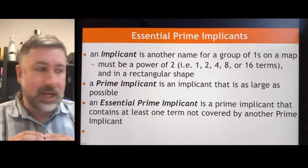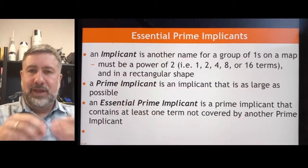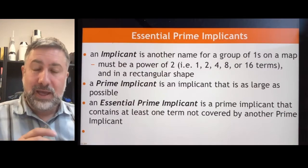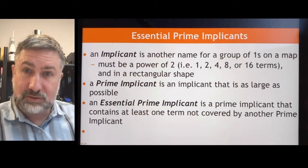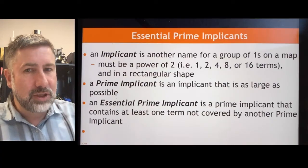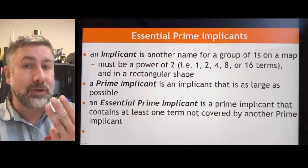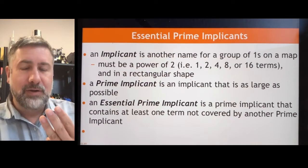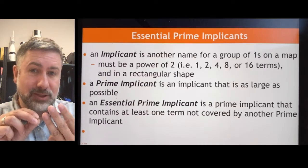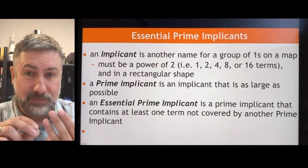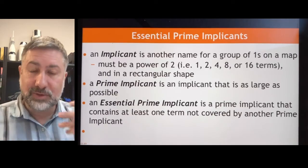They have to be in a rectangular shape — you can't have an L-shape, like 2 here and 4 there. They have to be in a rectangular shape. In the previous video, I showed an example of why a 3-term grouping didn't work, because the resulting simplified term of 3 minterms actually also includes that 4th minterm, so it doesn't correspond to those 3. With those 3, you'd have to do 2 and then 2.